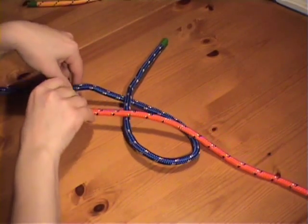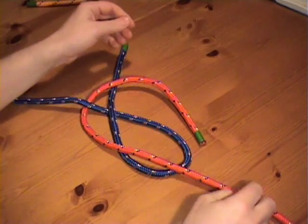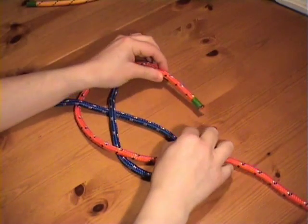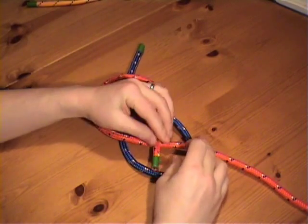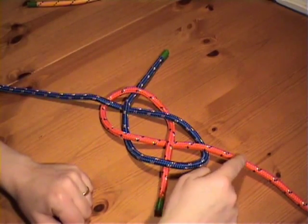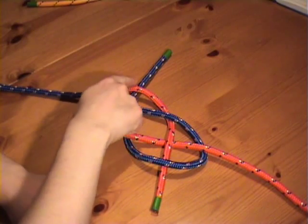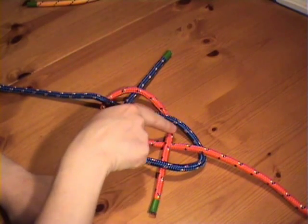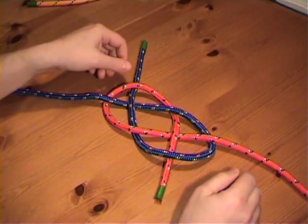Going under the standing part, over the working end, then under the crossing turn, over its own standing part, and then under the crossing turn again. So you can see it goes over, under, over, under, over, and under, over, under. That's a nice fairly symmetrical pattern.